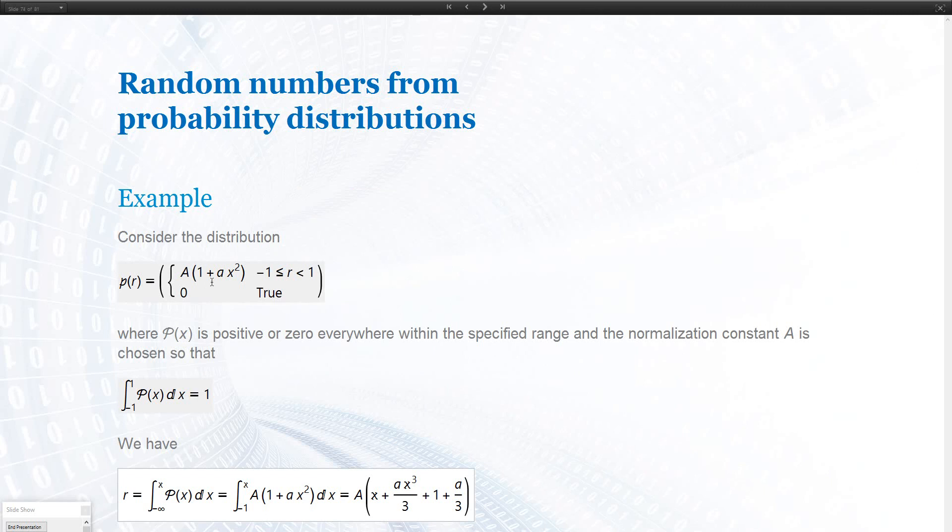Here again, on the bottom, this is what we just derived earlier. Now we put in P(x), so that should be an x here. We do the integral from minus one, because that's the lowest integral limit. And that's the result.